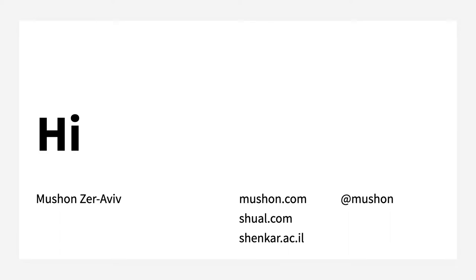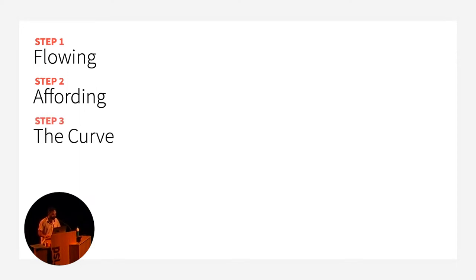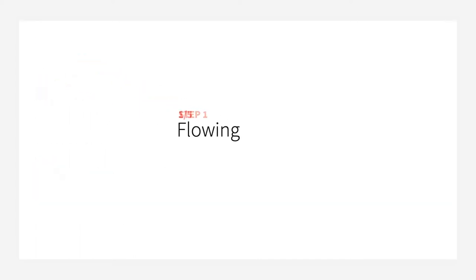I'm Ushan. I was already introduced so we can move forward. The talk is going to be broken into five steps: flowing, affording, the curve, future topologies, and friction mapping. None of this is supposed to say anything to you right now, but hopefully by the end of the talk it would. So let's start flowing.